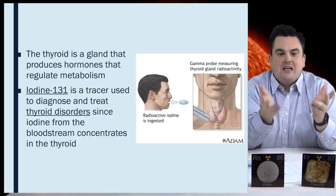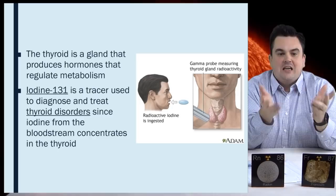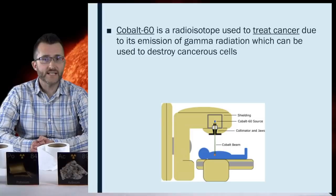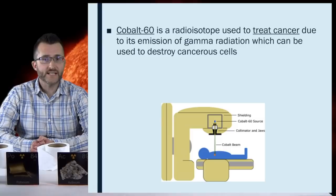Cobalt-60 is a radioisotope used to treat cancer due to its emission of gamma radiation which can be used to destroy cancerous cells. Because gamma radiation can also damage healthy cells, placement of the beam and dosage must be carefully calculated.